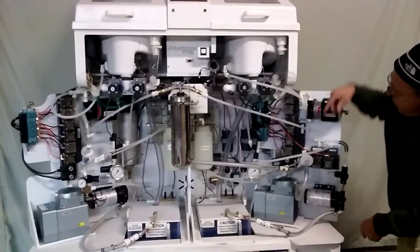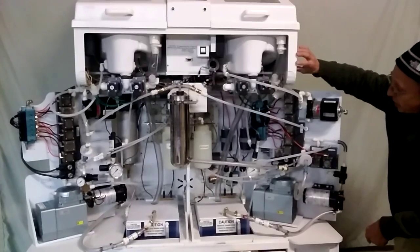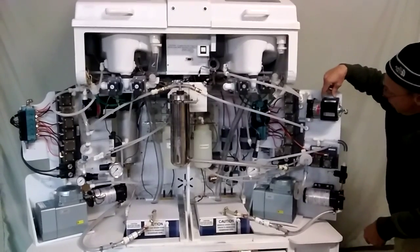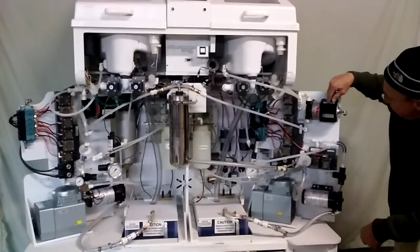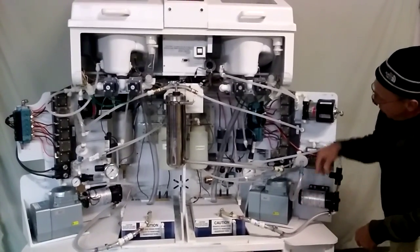And we've taken the A and the B subpanels and we've hinged them onto the case so that you can see all the components, like the recirculation pump, the water valves, the disinfectant pump, the air compressor.